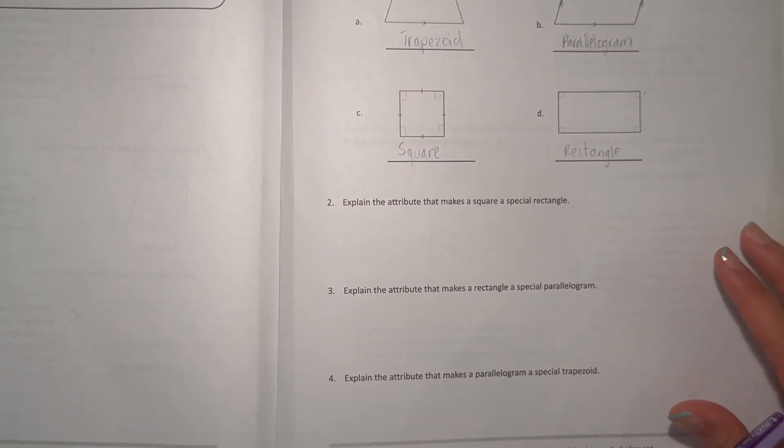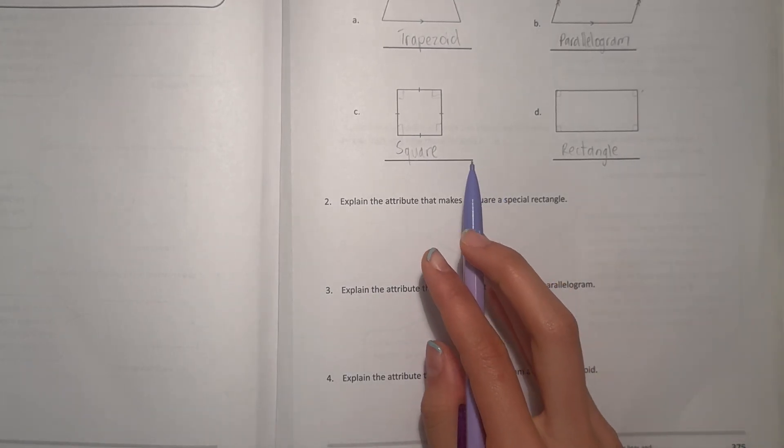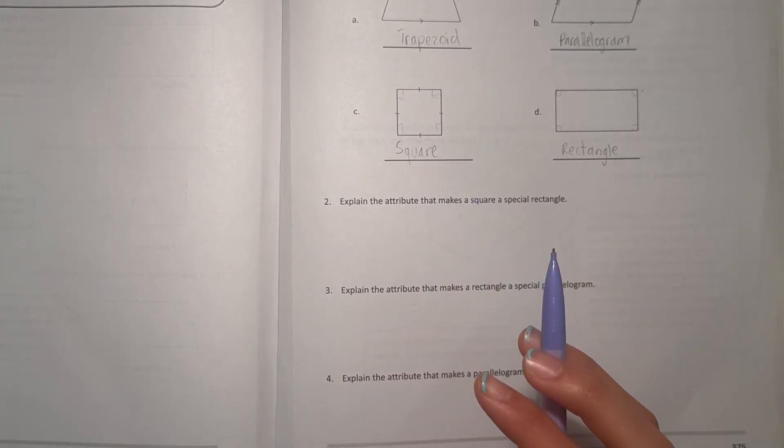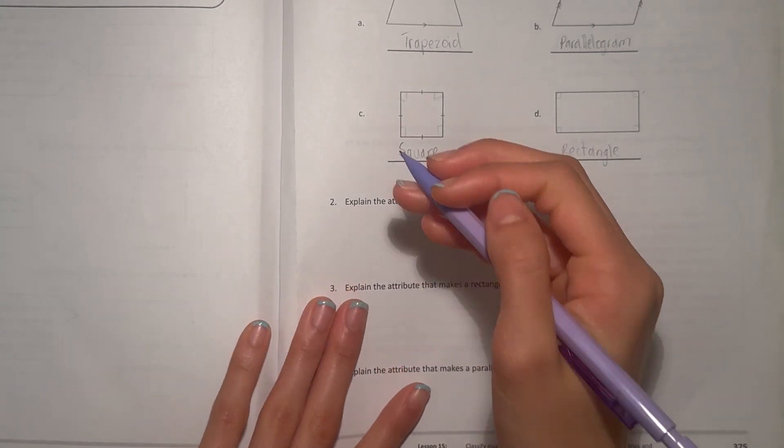Number two, explain the attribute that makes a square a special rectangle. Well, they both have parallel sides. They both have four right corners, but a square, all sides are equal. So,